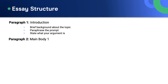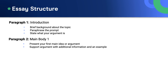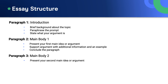Paragraph two should include the main body of your essay. Here, you present your first main idea or argument that supports your stance. Be sure to back this up with additional information and an example, then conclude the paragraph. Paragraph three is another main body paragraph. This is where you add your second main idea that supports your argument, or discuss the other side of the argument. Again, support this with additional information and an example, then conclude the paragraph.